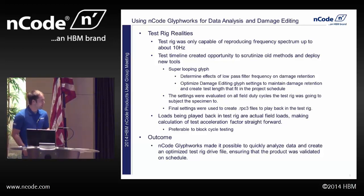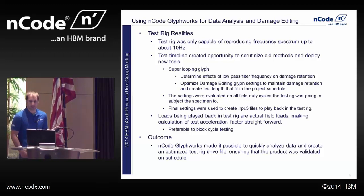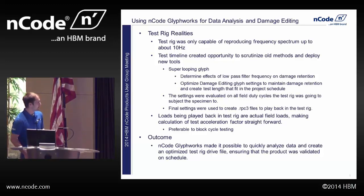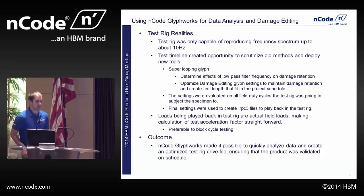For the low-pass filter I used to take our 200 Hz data down to what the test rig can handle, I evaluated it at 5, 10, 20, and 30 Hz to see what effect that would have on the amount of damage retained. It turned out 9 Hz was my final setting, and I only lost maybe 3% of the damage compared to calculating at 200 Hz — that's within the variability of going out and collecting this data again with the machine. The super looping glyph also allowed me to optimize the damage editing glyph by adjusting things like the window length to shorten or lengthen the time slice removed from the original data trace.